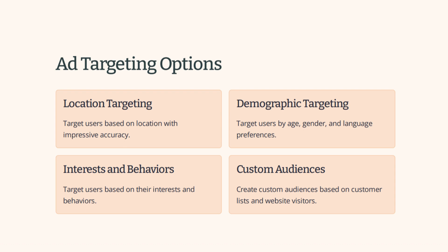Next is demographics — targeting users by age, gender, and language. We layer this on top of location: 123 Main Street in New Jersey, men aged 25–35 who speak English. Then we add interests and behaviors — for example, people who like the gym.